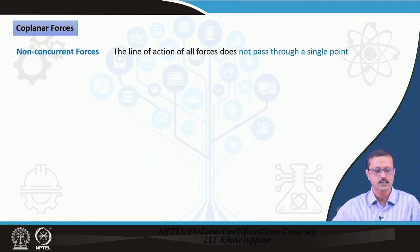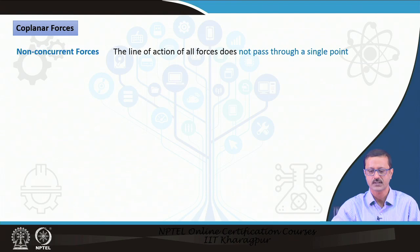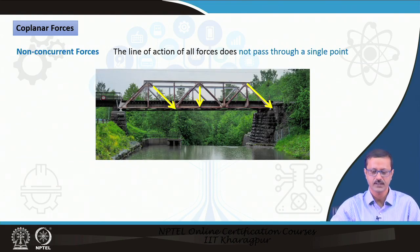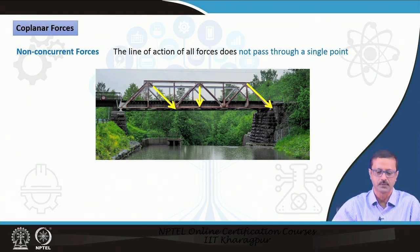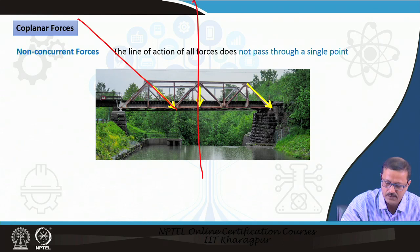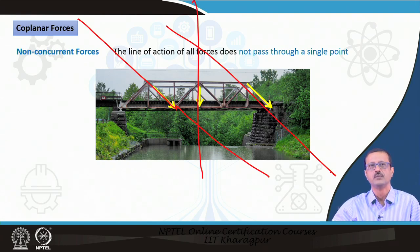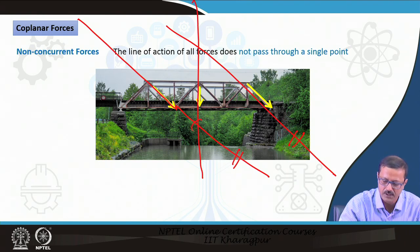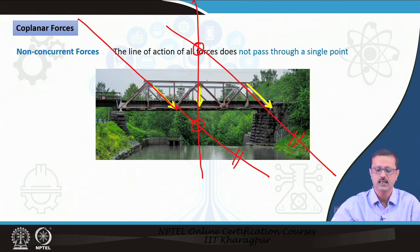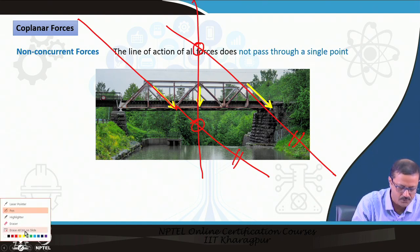Coplanar non-concurrent forces are those where the lines of action do not pass through the same single point. Taking the same truss example with three different members: if one member's line of action is here, another here, and a third here, they are not going to meet at a common point — some pairs are parallel, others meet at different points, but all three do not share a single intersection. These are coplanar non-concurrent forces.